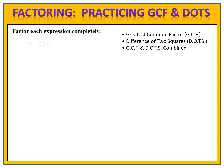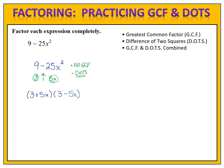Let's try another example: factor 9 minus 25x². We begin by looking for a greatest common factor — there are no numbers that divide both 9 and 25, so no GCF to take out. However, we do have a difference of two perfect squares: 3 times 3 is 9, 5x times 5x is 25x², and they're connected by subtraction. We factor this into conjugate binomials: (3 plus 5x)(3 minus 5x). Be careful with the order — writing (5x plus 3)(5x minus 3) would give 25x² minus 9, not 9 minus 25x².